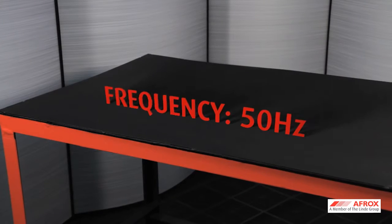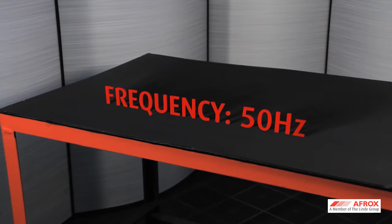When welding aluminum in AC mode, continuous high-frequency is required to stabilize the arc, as the arc switches on and off 50 times per second.